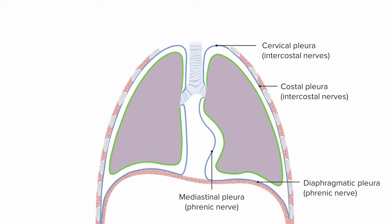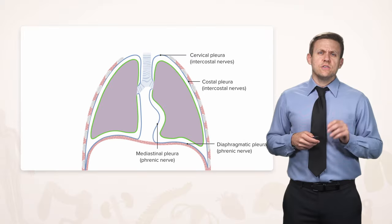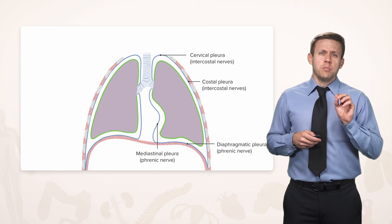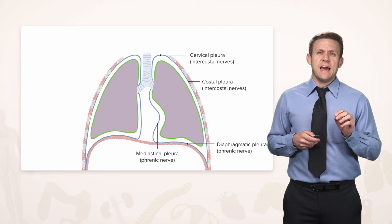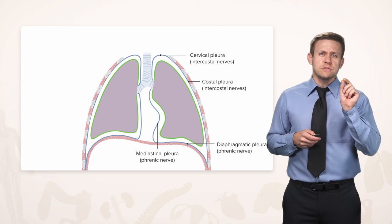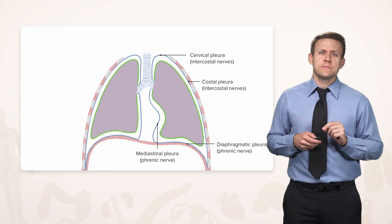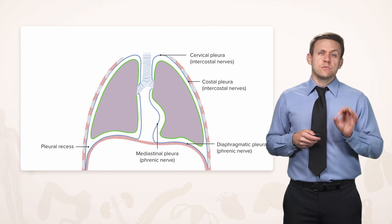The phrenic nerves actually take a route through the mediastinum in order to reach the diaphragm. Finally, there are a couple of portions where the lungs don't quite fill the pleural cavity very well, and the pleura almost forms a little double fold on itself — we call that a pleural recess.